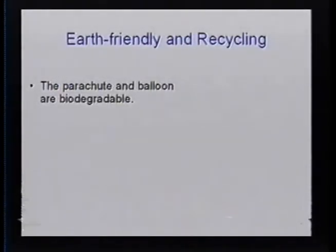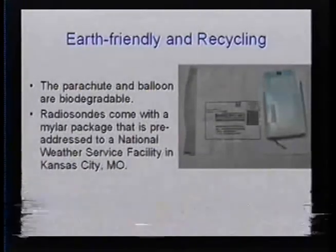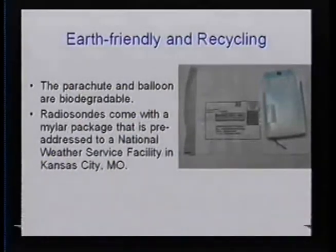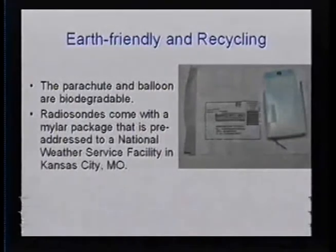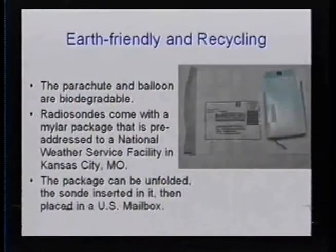We have designed this system so we can recycle them as efficiently as possible at the least cost. The parachute and balloon do break down—they are biodegradable. The radiosondes come inside a box with a package that the radiosonde can be slipped into and sealed up. It has a pre-addressed label and is sent to a facility in Kansas City, Missouri where weather service people take apart the used radiosondes and recycle the components like the temperature sensor, humidity sensor, and pressure sensor. You can just unfold the package, drop the radiosonde in, and place it in any U.S. mailbox.